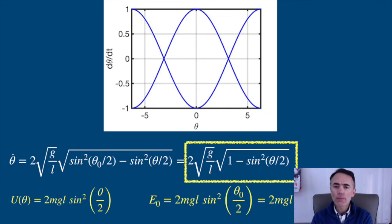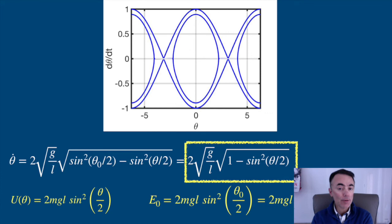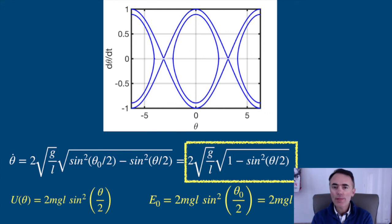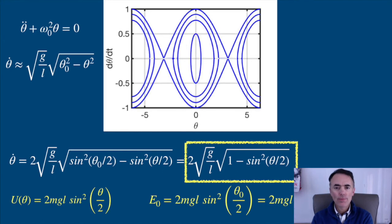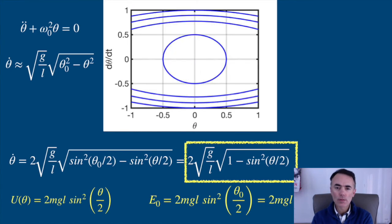But I can plot it for a pendulum with less energy, by imposing that theta naught is smaller than pi. For small angles, I can use the approximation. And the paths in phase space are circles, as expected for a simple harmonic oscillator.